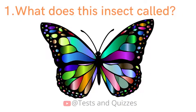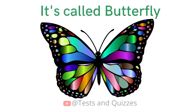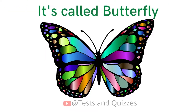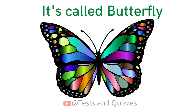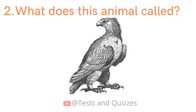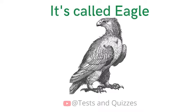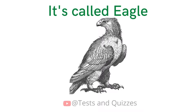What does this insect call? It's called butterfly. What does this animal call? It's called eagle.